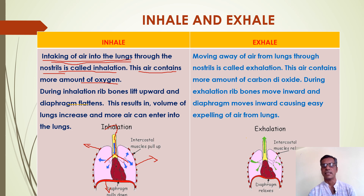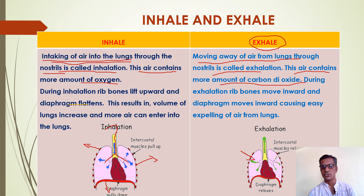Exhale means the opposite of inhale — the moving away of air from the lungs through the nostrils is called exhalation. The exhaled air contains more amount of carbon dioxide. At the time of exhalation, the rib bones move inward direction, and the diaphragm also moves inward. As the diaphragm and the rib bones move inward, the volume of the lungs decreases and it creates pressure inside the lungs. Due to this pressure, the air moves away from the lungs into the trachea and finally to the nostrils. This process is called exhalation.